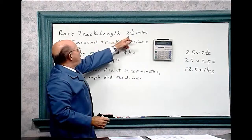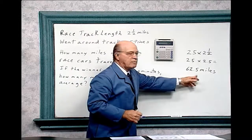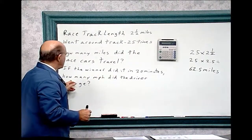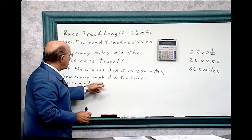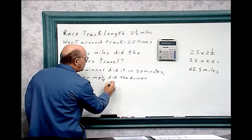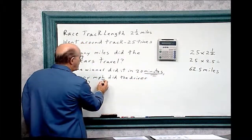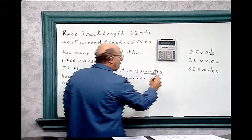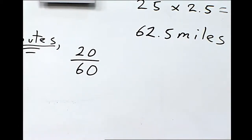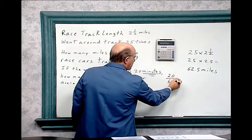The racetrack length is 2 and 1/2 miles, and the racecars going around 25 times, they travel 62.5 miles. Now I have another problem: if the winner did it in 20 minutes, how many miles per hour did the driver average? This is miles per hour and this is in minutes, so you have to convert 20 minutes into an hour. What portion of the hour is 20 minutes? 20 minutes is 20 over 60.